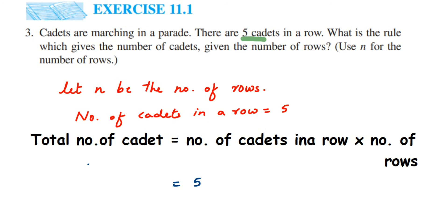So the total number of cadets is five into n, which is 5n. I hope it's clear — this is a simple question; you just have to understand the concept. In case you have further questions or doubts, you can drop a comment. Thank you so much for watching.